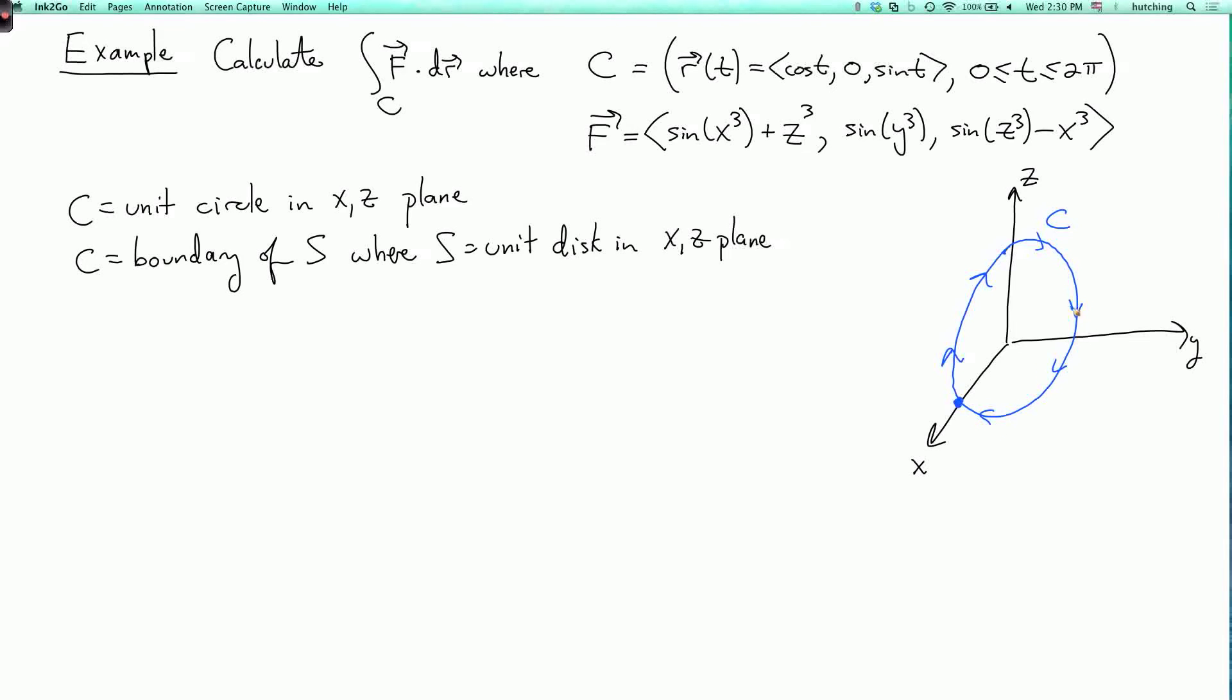And here is our surface s. Now which orientation should s have in order for c to be positively oriented as its boundary? Well, the answer is the unit normal has to point to the left in the negative y direction.